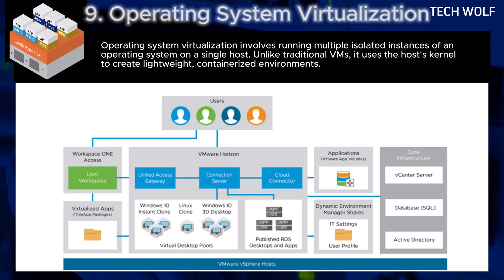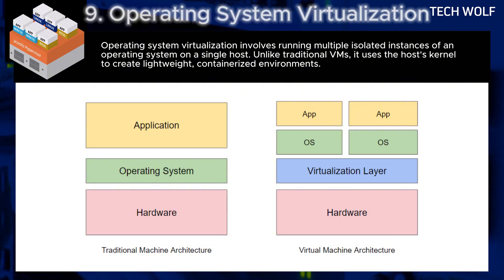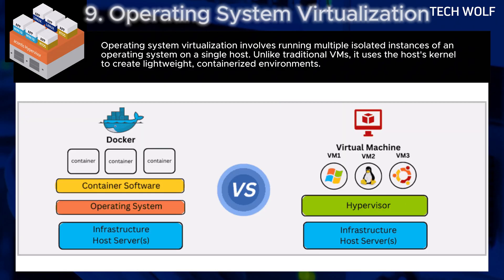The next virtualization type is operating system virtualization. Operating system virtualization involves running multiple isolated instances of an operating system on a single host. Unlike traditional virtual machines, it uses the host kernel to create lightweight containerized environments. An example is Docker, which allows developers to create and deploy containers, each running isolated applications. A containerized web app can run alongside other containers without interfering, all using the host system's Linux kernel.